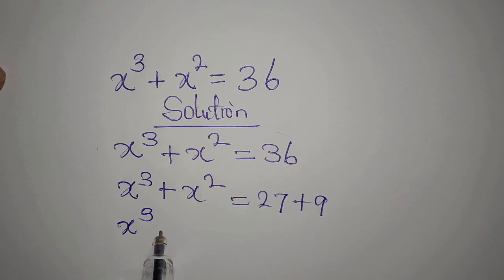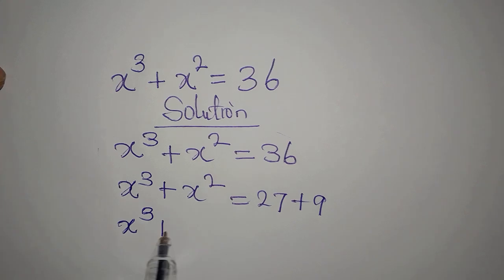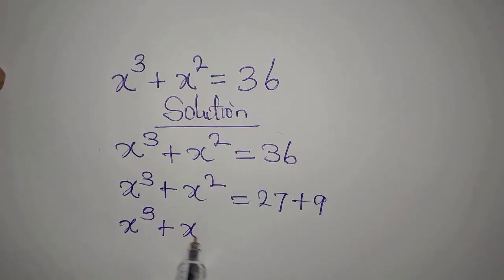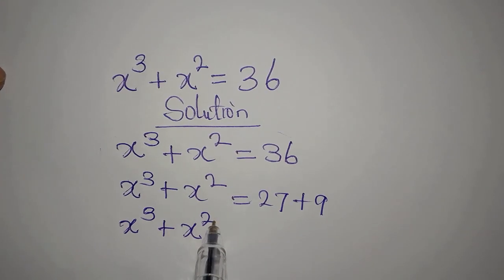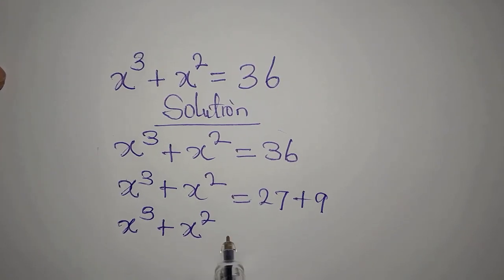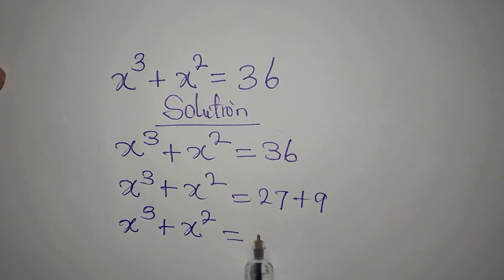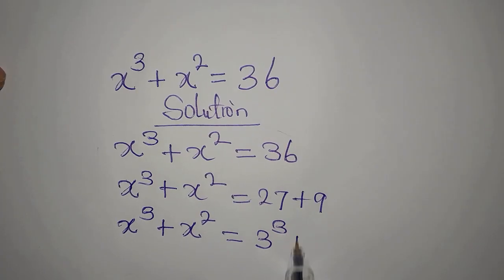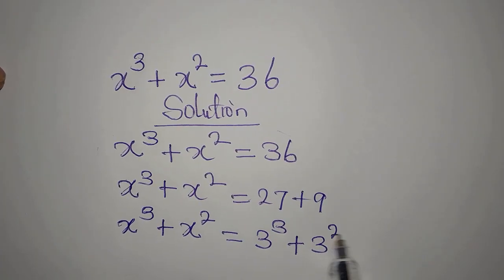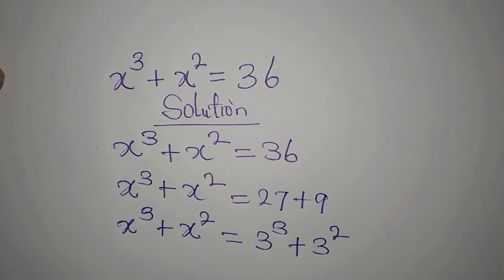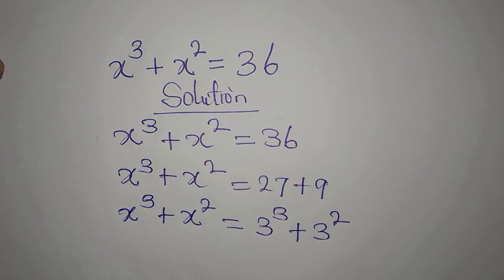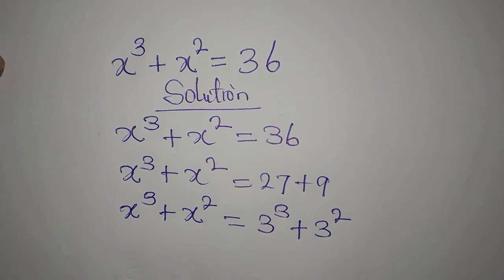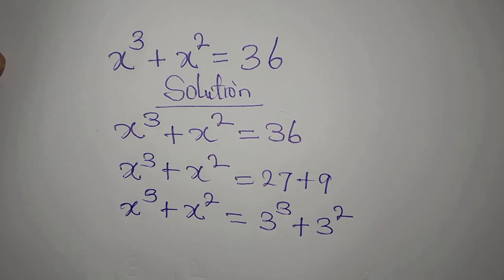So we break it down: x to the power of 3 plus x to the power of 2 equals 3 to the power of 3 plus 3 to the power of 2. From here we can conclude that x equals 3.